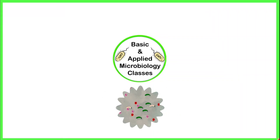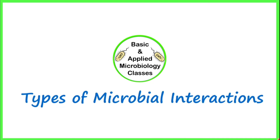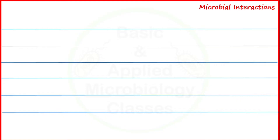Hello everyone, welcome back. In this video I'll be introducing you to types of microbial interactions. Microorganisms or microbial populations living in different kinds of environments usually interact with each other in seven different ways — so there are seven different types of microbial interactions. We will try to understand each of these interactions one by one.